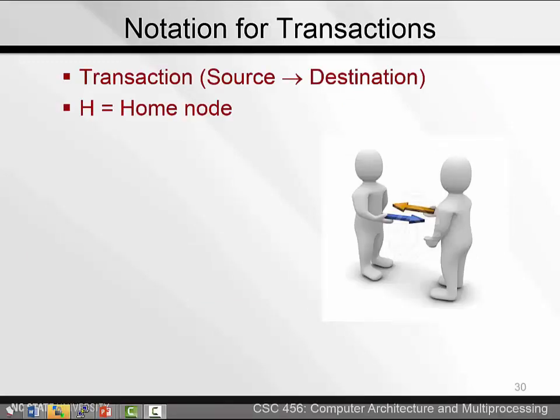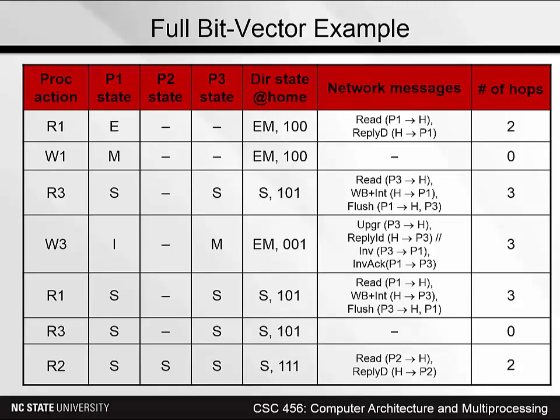We're about ready to look at a tableau of actions that took place in this protocol, just like we did for the bus-based protocols. But before we do that, we need to introduce some notation. When we give a network transaction, we'll also identify, in parentheses, the source and destination nodes. Node H will signify the home node. This table shows which caches have the block in which state after each instruction, and which network transactions take place. For example, on the first instruction, there is a read issued to the home node, followed by a reply D to the requester. Many memory operations require several transactions. If two transactions can start at the same time, we separate them by slash-slash. For example, the W3 action causes four network transactions: an upgrade, a reply ID, an inv, and an inv-ack. The inv can be sent before the reply ID completes.